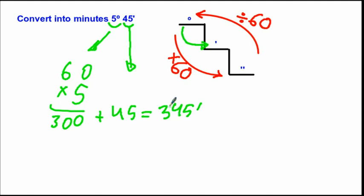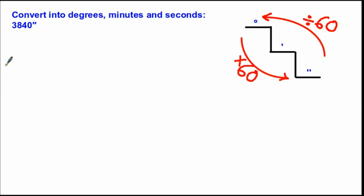Now we add the 45 minutes to get the final result: 300 plus 45 equals 345 minutes. So 5 degrees 45 minutes equals 345 minutes.